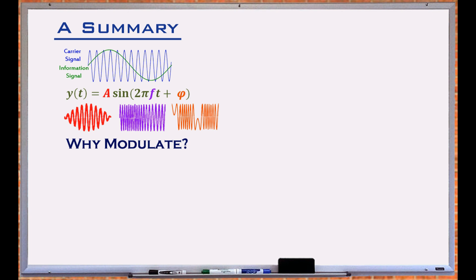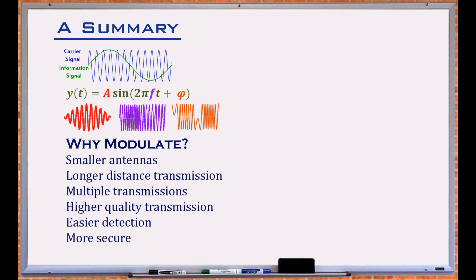Once a low-frequency wave is modulated, it travels longer and requires smaller transmission antennas. Modulation also allows multiple transmissions, each with its own unique carrier frequency. Each modulation technique offers its own benefits and is intended for a particular application.